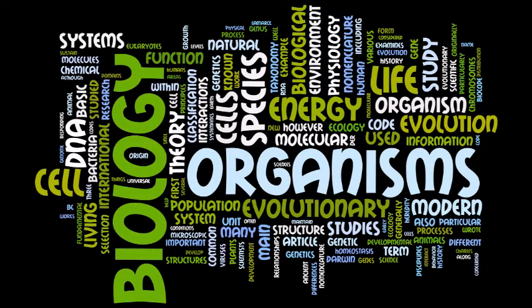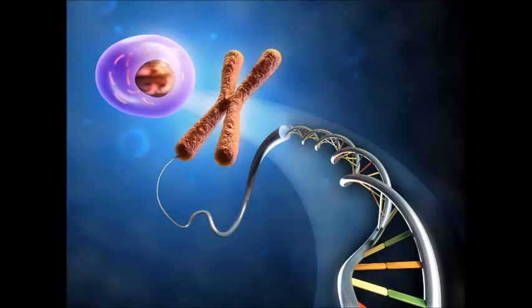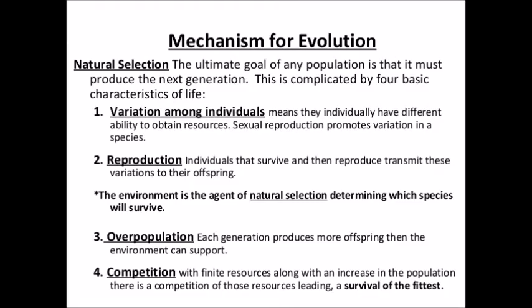In the first video of this series, we discussed some key concepts in biology that you need to understand. In the second video, we talked about the first mechanism of evolution, mutation, which, along with genetic recombination, generated the necessary genetic variation within populations to move evolution along. Now we are going to talk about the remaining mechanisms of evolution, selective and non-selective ones: natural, sexual, and artificial selection, the founder effect, genetic drift, and gene flow.